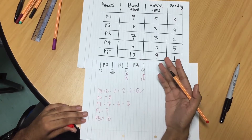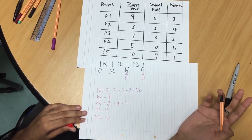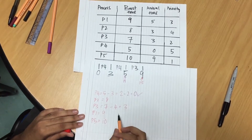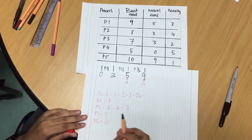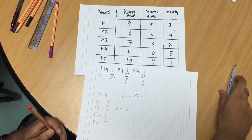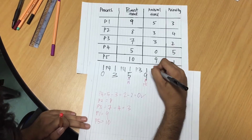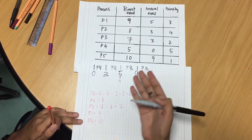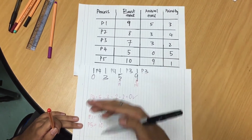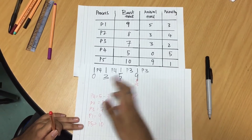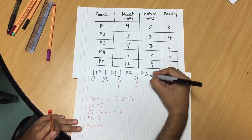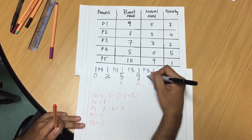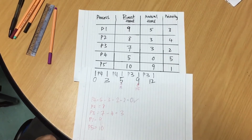Now we have to find which process to execute again — we compare the shortest burst times. The shortest burst time is P3, which is 3 milliseconds, so P3 will be executed again. Since everything has now arrived, there won't be any more interrupts. P3 can be processed until completion. It has 3 more milliseconds, so 9 plus 3 equals 12 milliseconds. P3 is done.